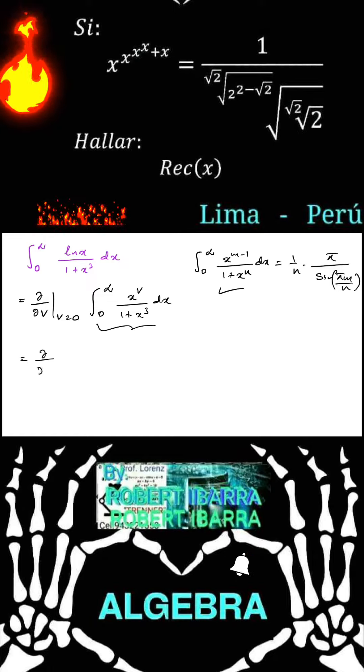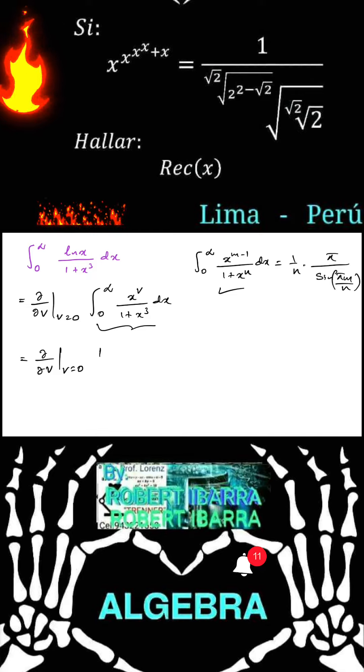So we can write, this is equal to partial derivative, here v is equal to 0. Now, we have 1 over n, we know 3. So, 1 over 3 pi over sin of pi times v plus 1 over 3.